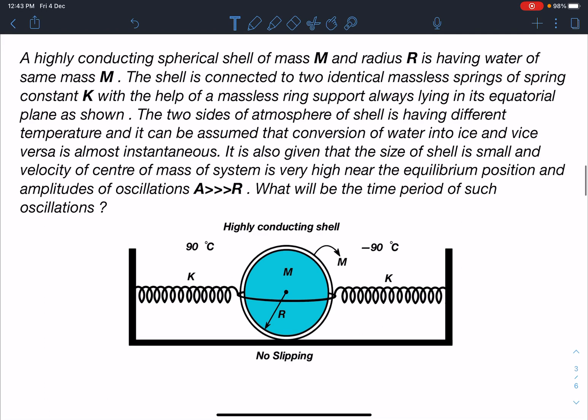Here is the statement of this problem: A highly conducting spherical shell of mass M and radius R is having water of same mass M. The shell is connected to two identical massless springs of spring constant K with the help of a massless ring support always lying in its equatorial plane. So I'm talking about this ring, so it remains in the equatorial plane all the time.